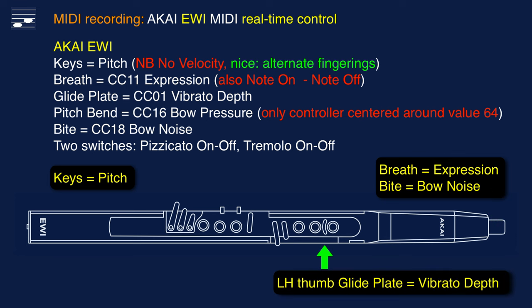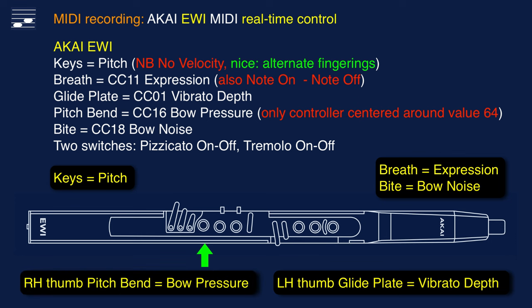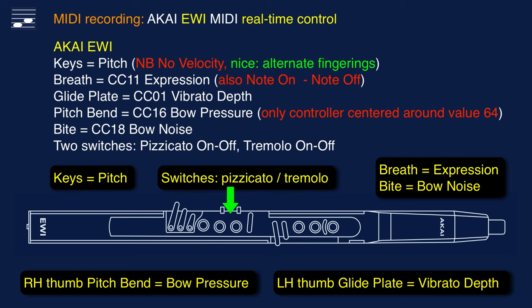On the lower side there is the glide plate, which I use to control vibrato, plus the set of two pressure plates for the right-hand thumb. In standard setup this is meant for pitch bend. Since it is the only input element centered around value 64, I use it to control SWAM bow pressure, which has an initial value of 64. This is a serious limitation when using EWI for SWAM instruments. Finally, I set the two side switches for pizzicato and tremolo playing technique selection.